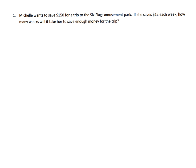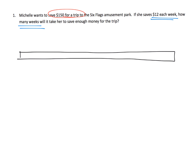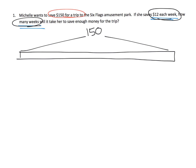So Michelle wants to save $150 for a trip to the Six Flags Amusement Park, and if she saves $12 each week, how many weeks will it take her to save enough money for the trip? So what is that tape diagram going to look like? Well, one way to draw it is you've got your tape, and that entire tape represents the $150. If she saves $12 each week, each section represents a $12 saved for that week.